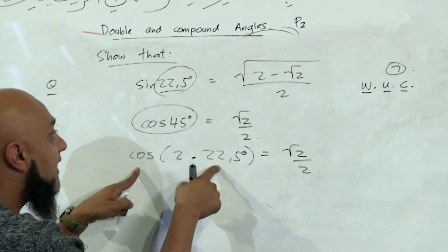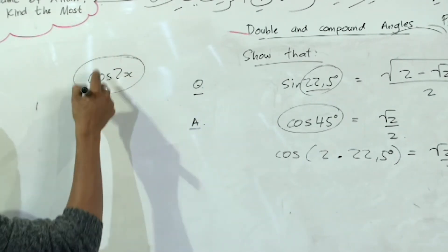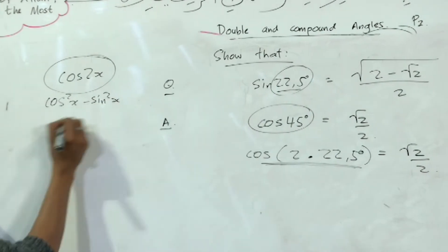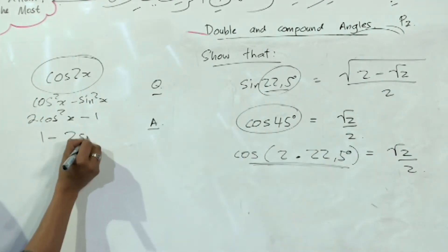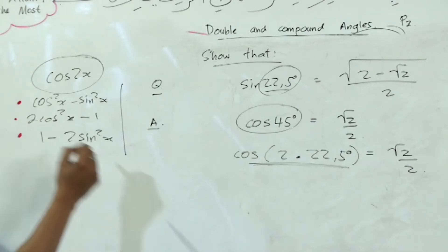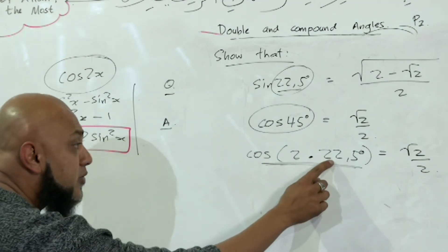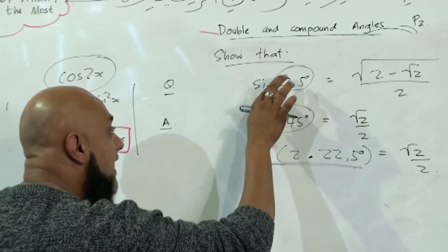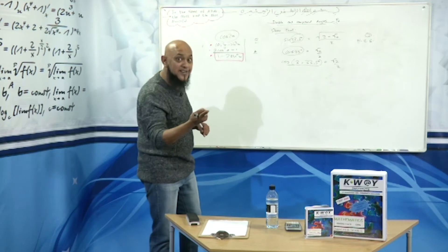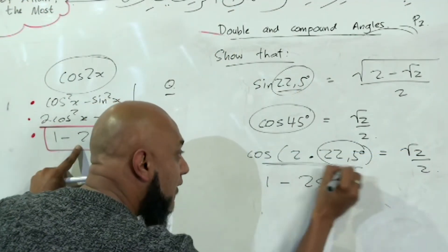Now, which of your cos formulas only has sine in it? Remember, cos of a double angle — cos(2x) — has three formulas: cos²x − sin²x; 2cos²x − 1; and 1 − 2sin²x. Which of these three only has sine in it? It's the last one. So cos(2 × 22.5°), expressed in terms of sine, becomes 1 − 2sin²(22.5°). Cosine can be broken up in terms of sine, but sine can't be broken up purely in terms of cosine — that's why we use the cosine double angle formula.